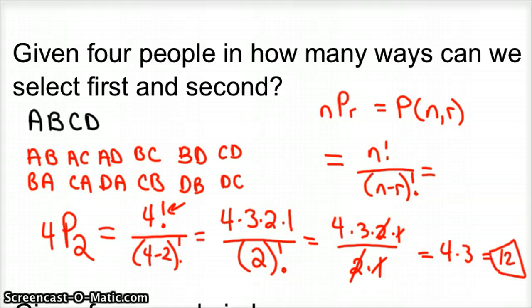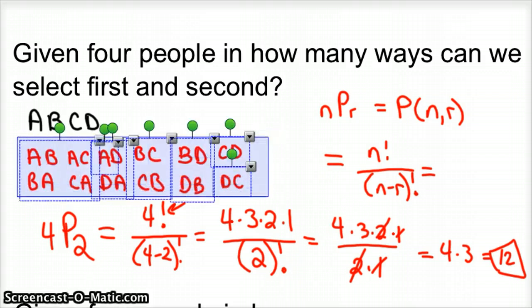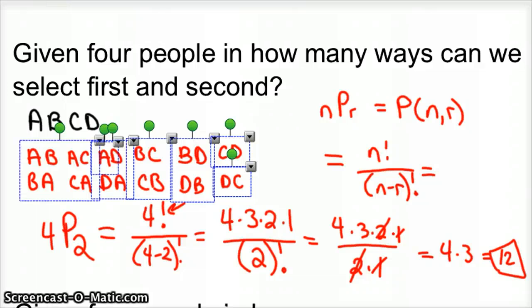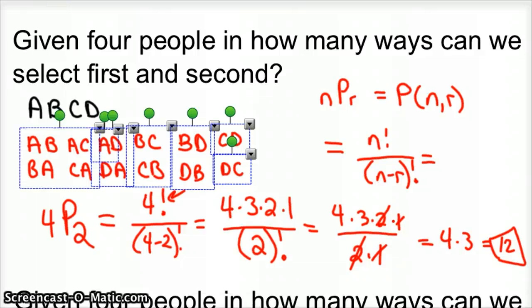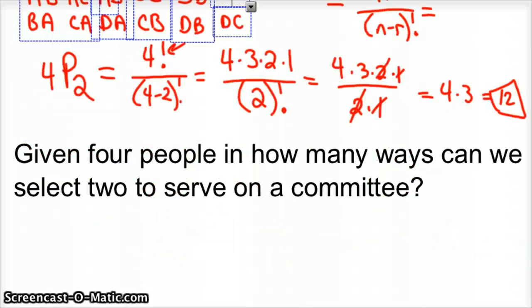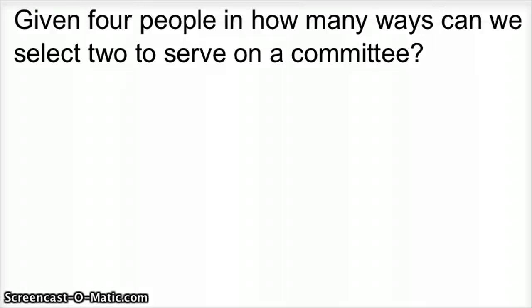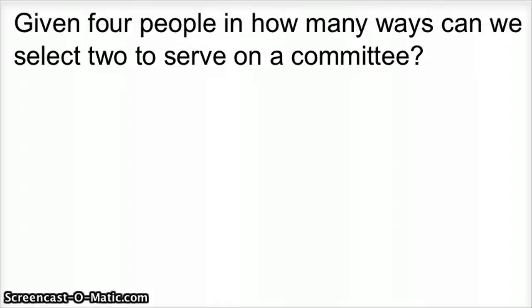So that is permutation. Combination, on the other hand, very similar. In fact, I'm going to select my sample space for that last problem. I'm going to copy it. Because let's read this next one. Given four people, in how many ways can we select two to serve on a committee?